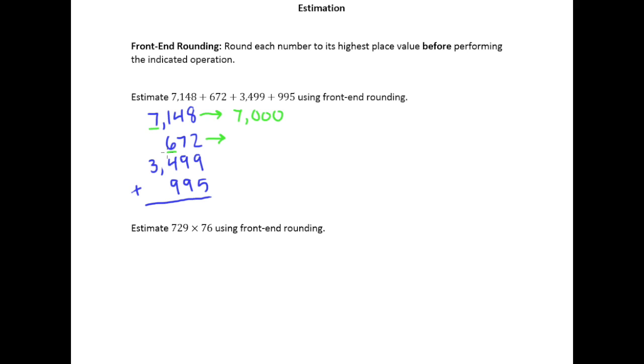The hundreds place is the biggest digit in this number, so that's my rounding digit. My test digit is 7, so that tells me to bump my 6 up to a 7 in the hundreds place and put zeros after that.